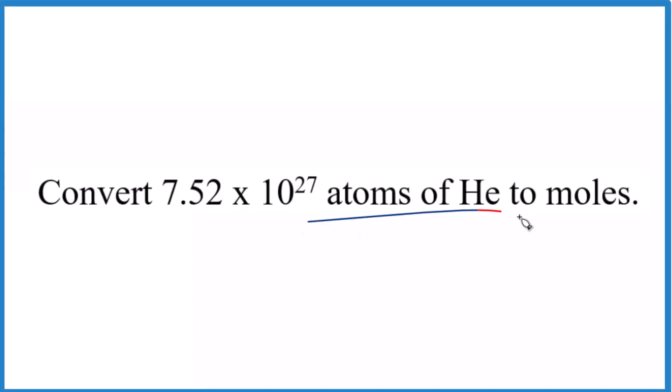Let's convert atoms of He to moles. We have 7.52 times 10 to the 27th atoms of helium gas, and we want to convert this to moles. This is just a number we made up for this problem.